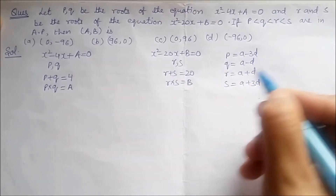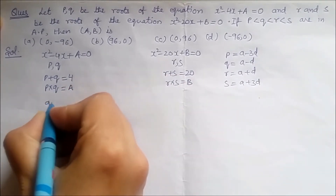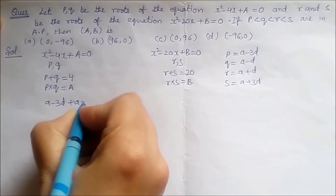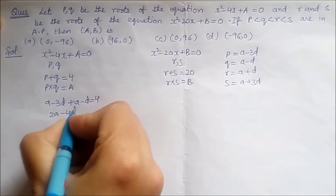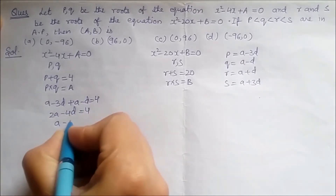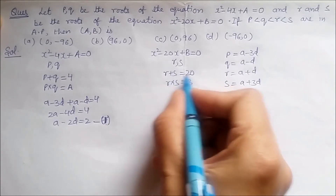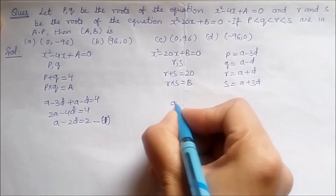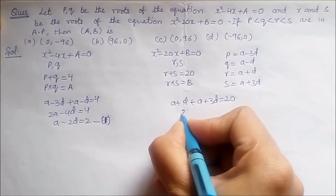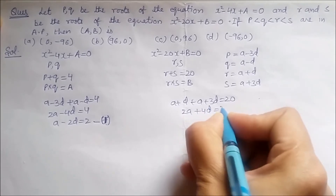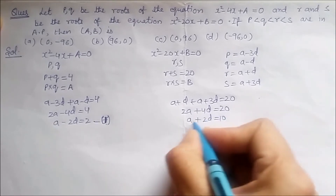Substituting into p + q = 4: (A - 3d) + (A - d) = 4, giving 2A - 4d = 4, or A - 2d = 2. This is our first equation. Substituting into r + s = 20: (A + d) + (A + 3d) = 20, giving 2A + 4d = 20, or A + 2d = 10. This is our second equation.